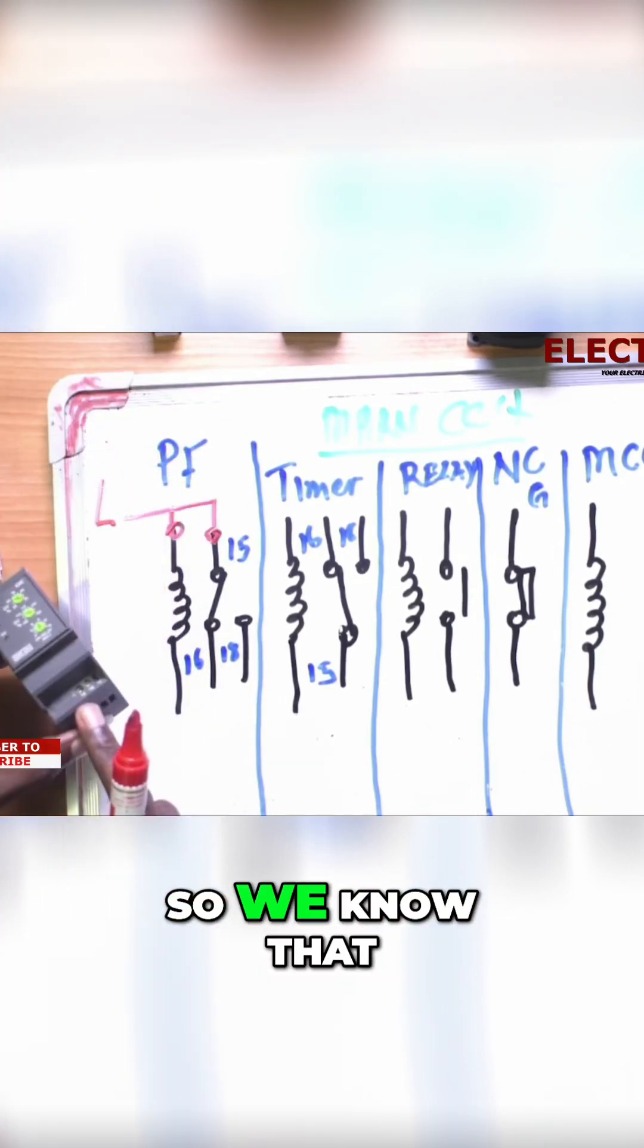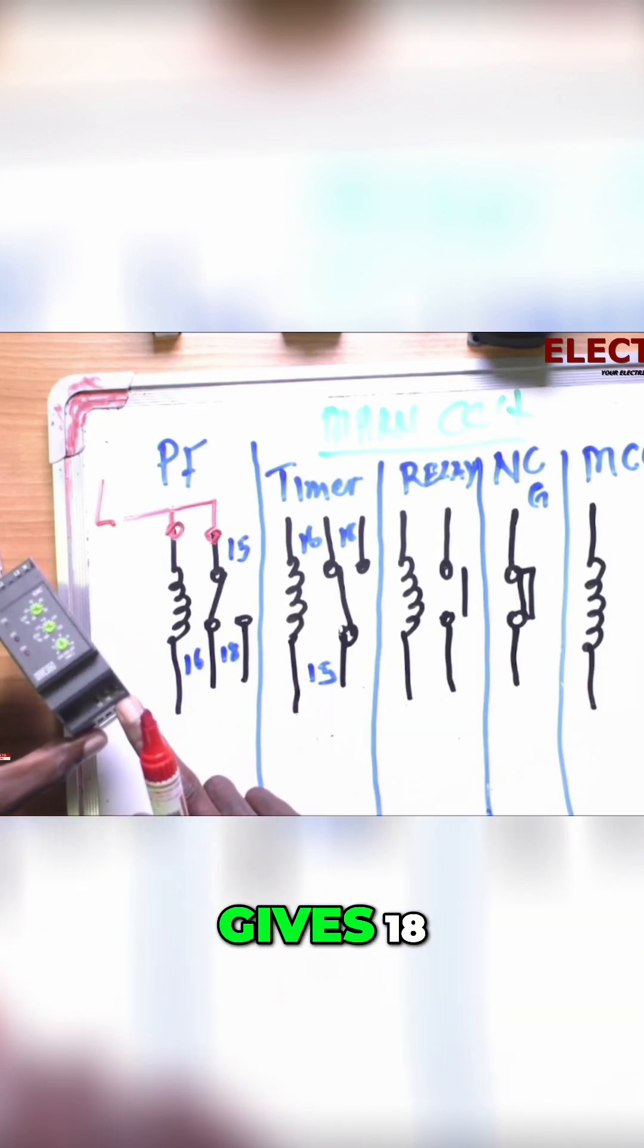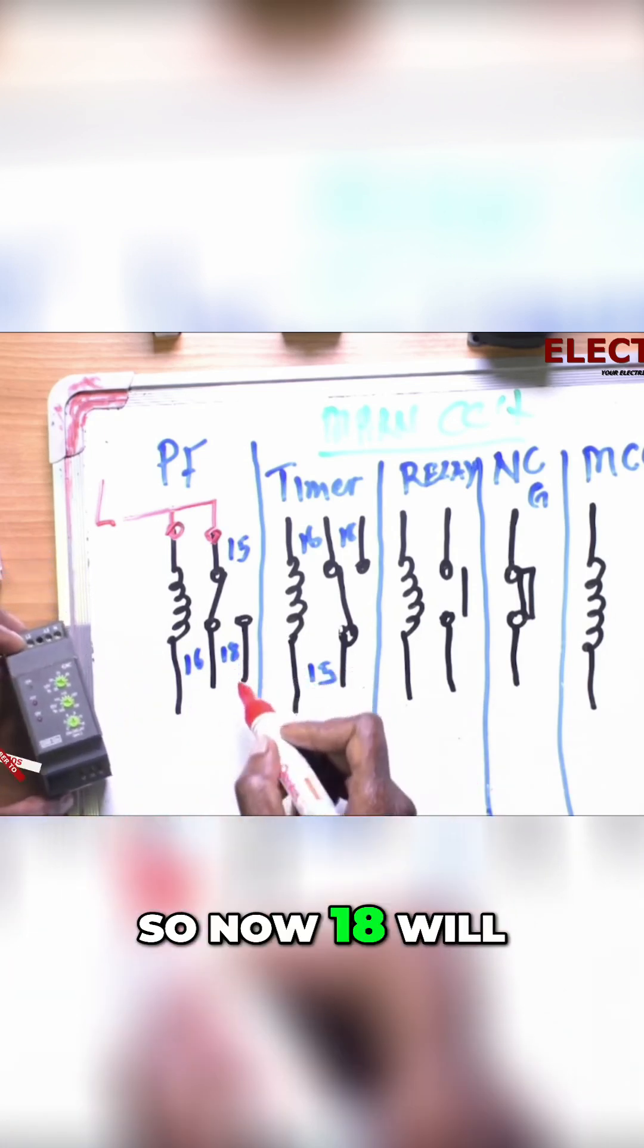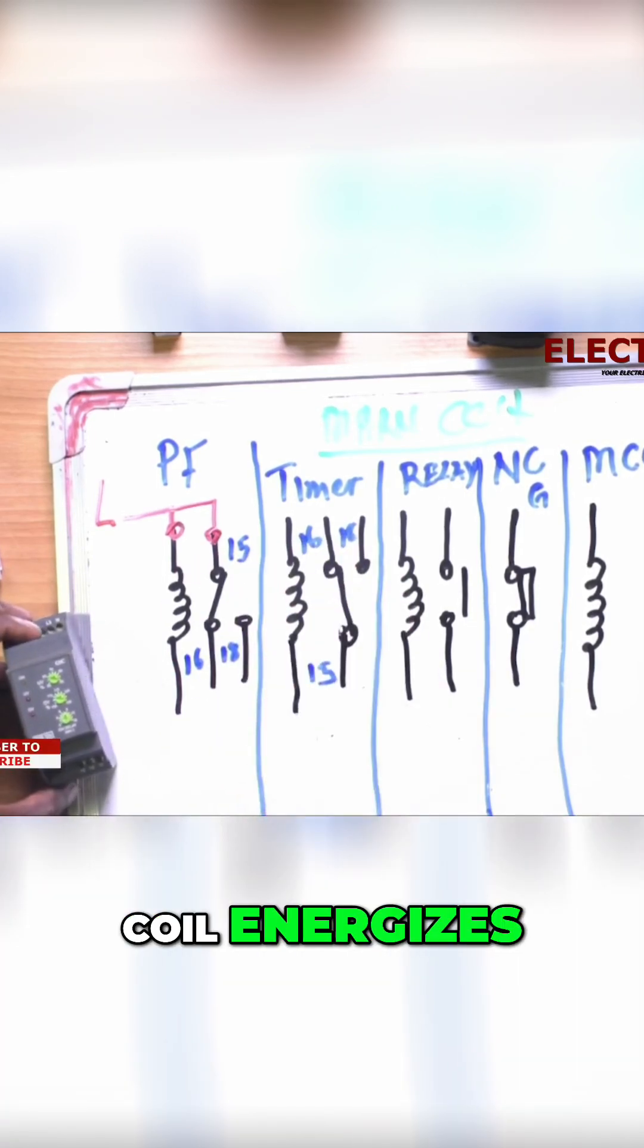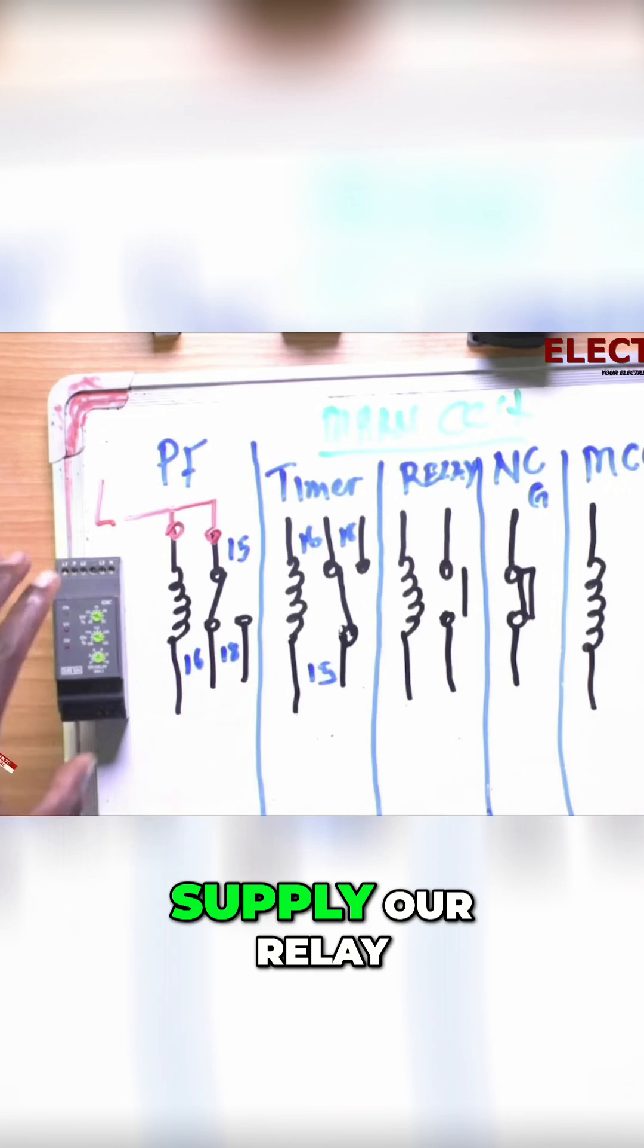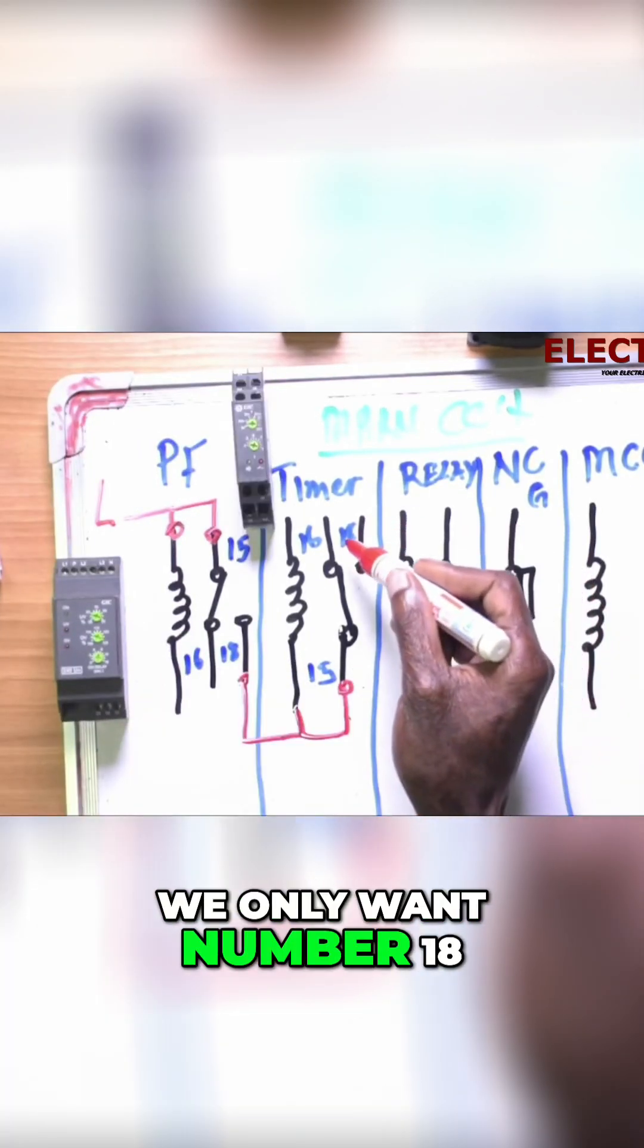When this energizes, it gives 18. Now 18 will get power when this coil energizes, and then it will supply our relay and timer. We only want number 18, which is normally open.